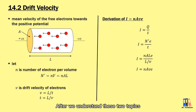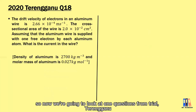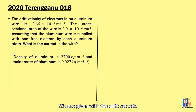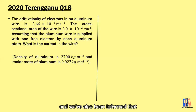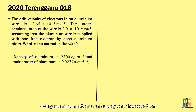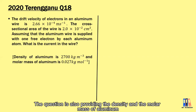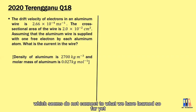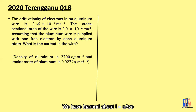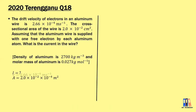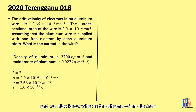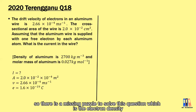Now we will look at a question from the Terengganu trial paper. We are given the drift velocity, the cross-sectional area of the wire, and are told that every aluminium atom supplies one free electron. The question also provides the density and molar mass of aluminium. We need to find the current using I equal to nAvE. We have the area, drift velocity, and charge of the electron, so the one missing value is the electron density n.